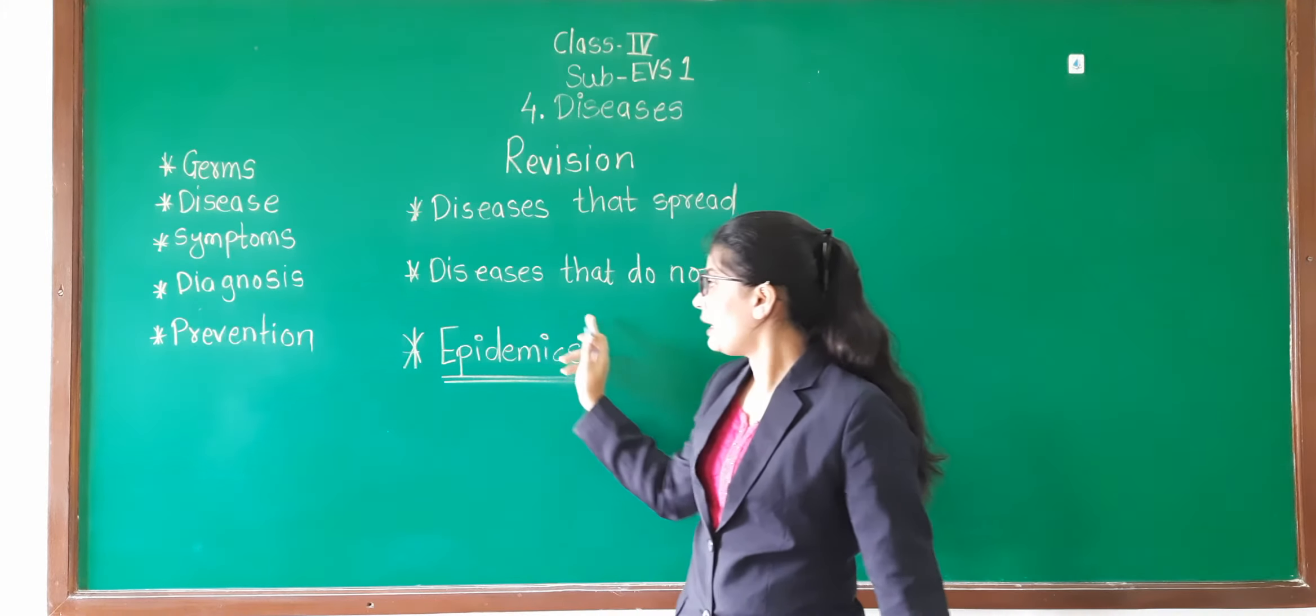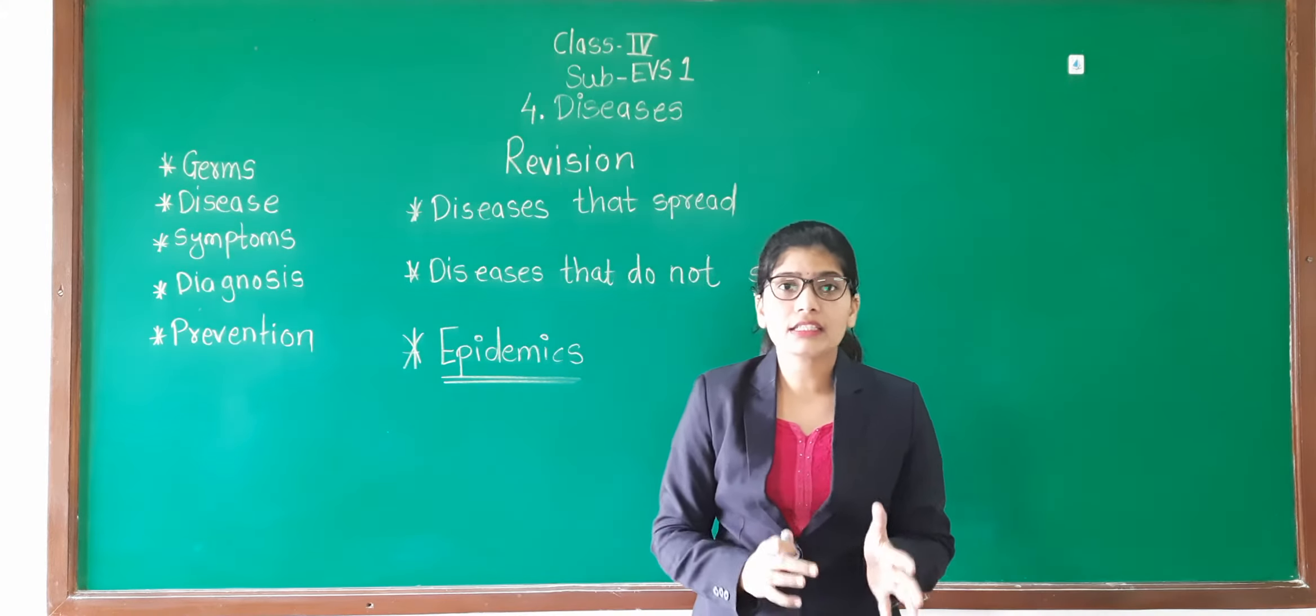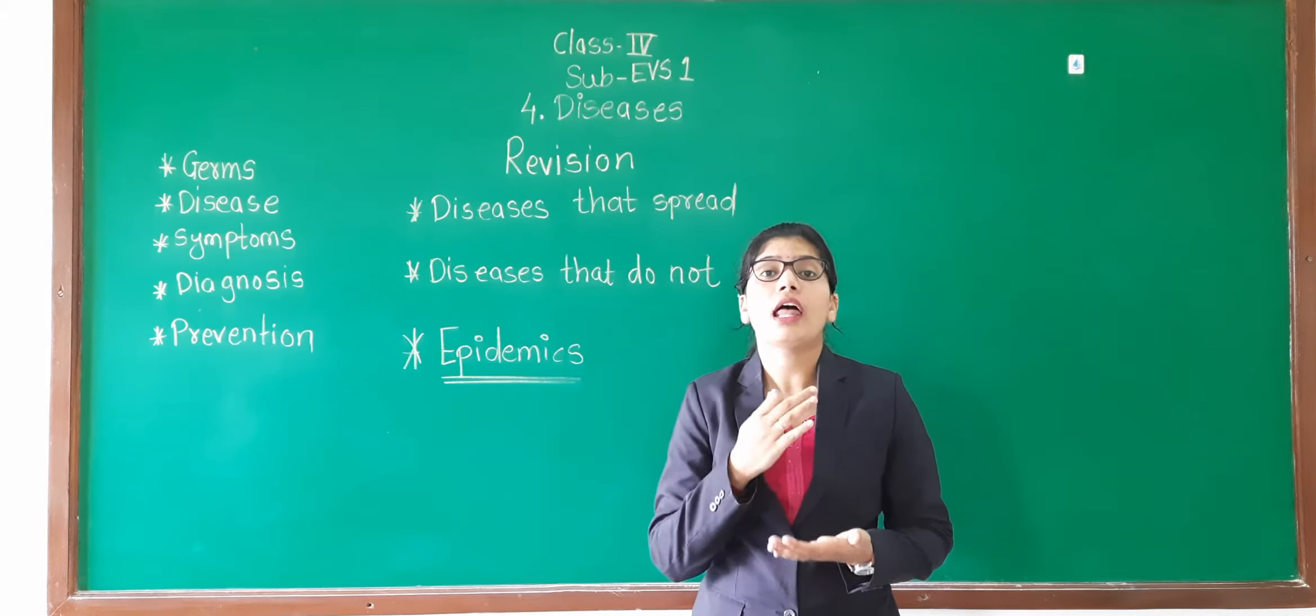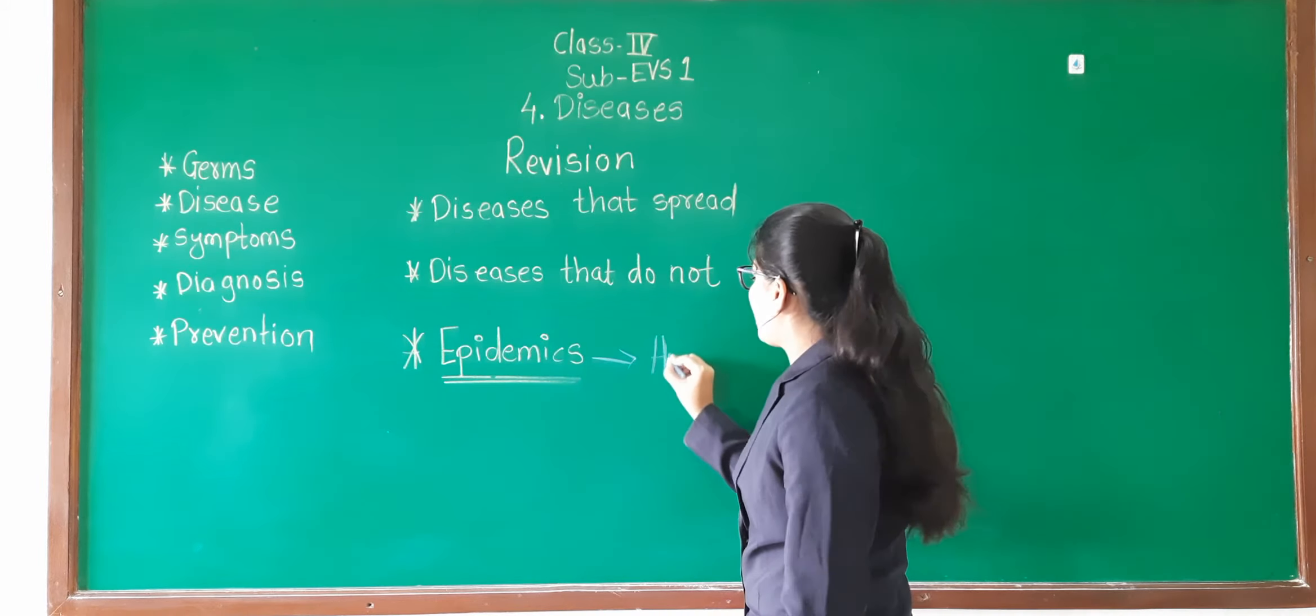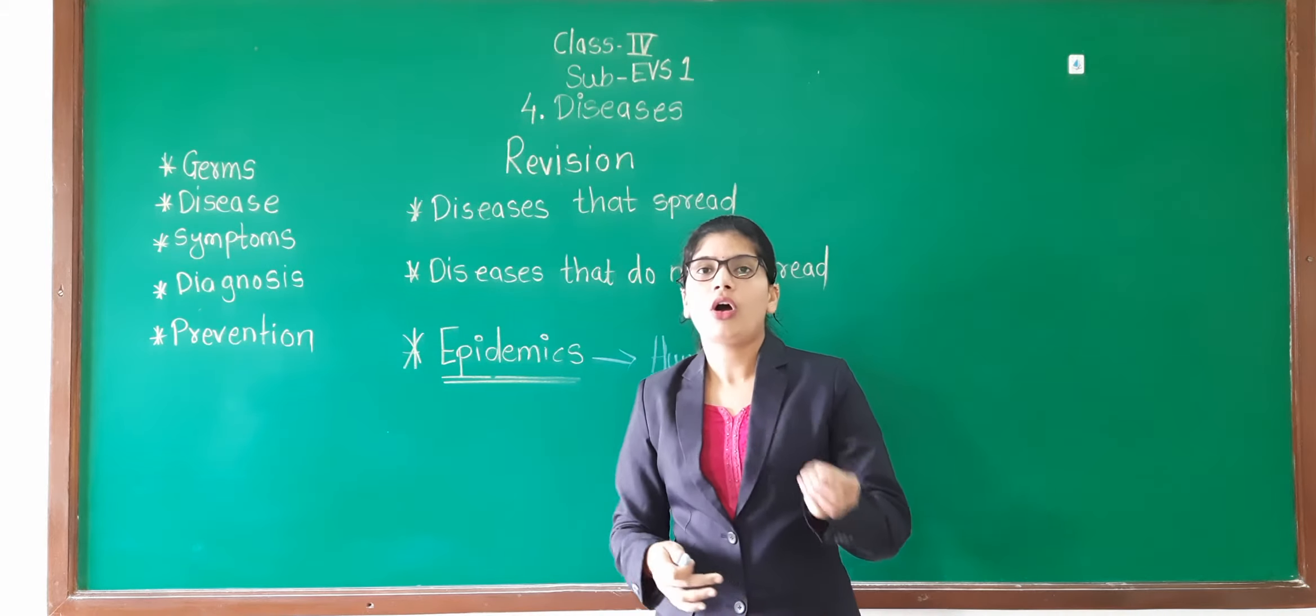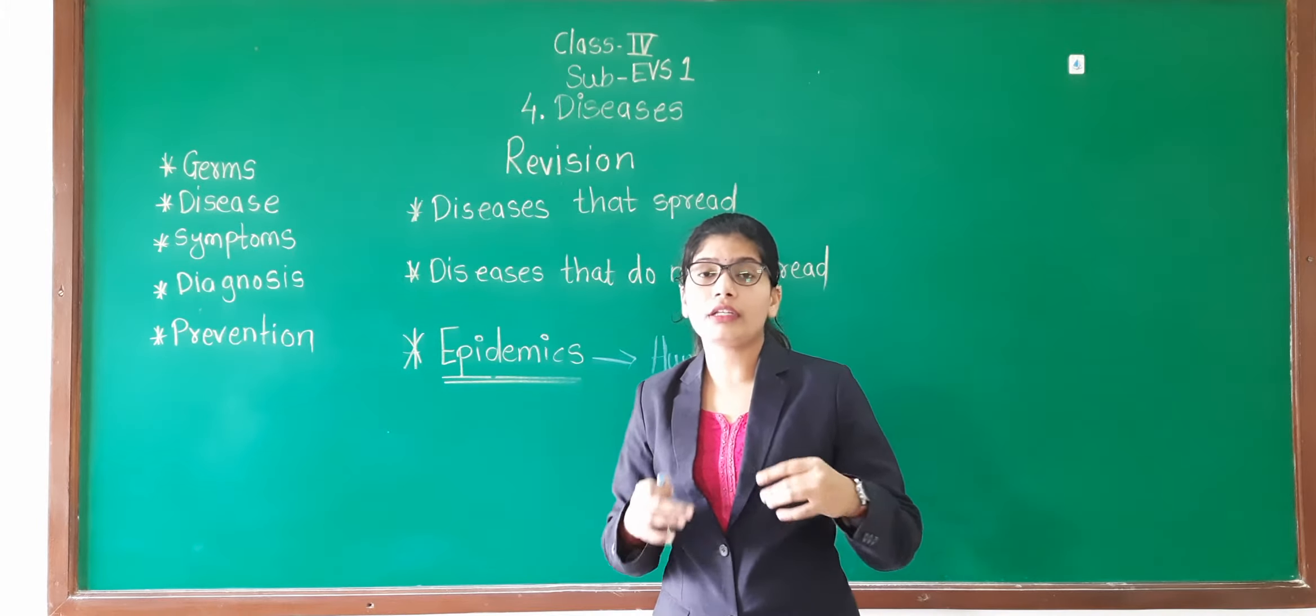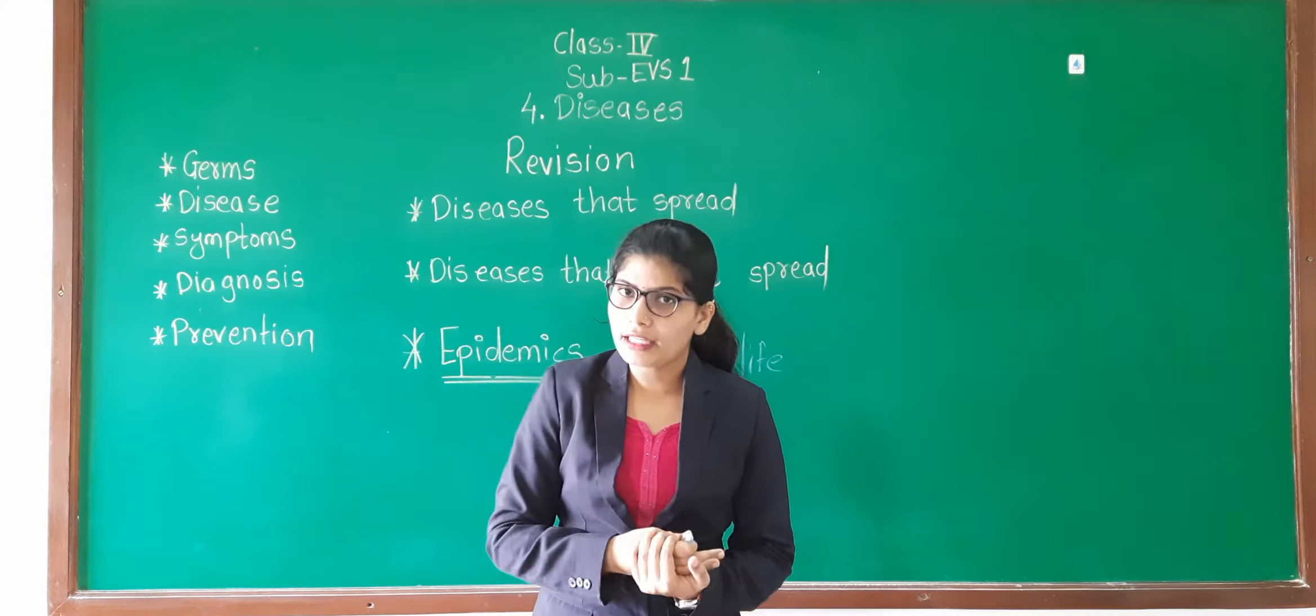Now the new point is epidemics. Now epidemics means what? So that is a serious condition in which because of a particular disease, there is a huge loss of human life. That means, this epidemics directly affect human life. Not only one or ten or hundred people are dying. So in epidemics, thousands of people or sometimes the number is in lakhs, is in crores.